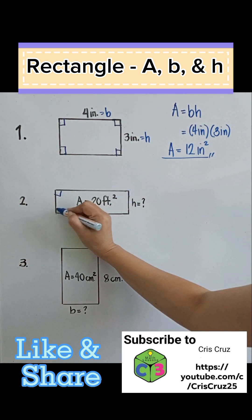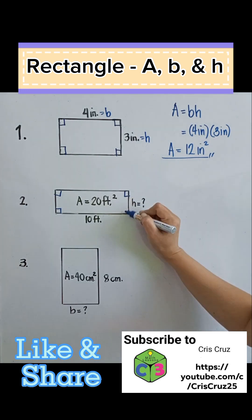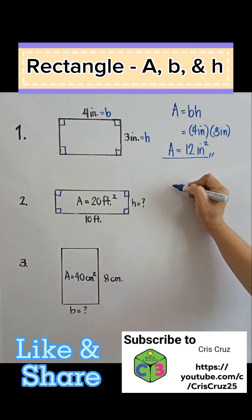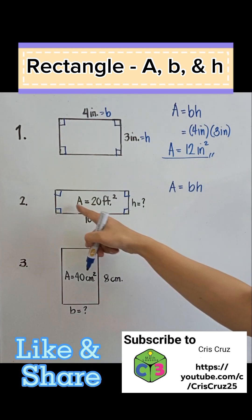Again, to make sure that this is a rectangle, let us put the 90-degree symbol in each corner. Again, the area is base multiplied by the height.